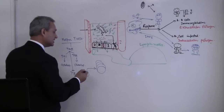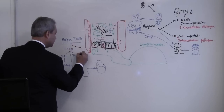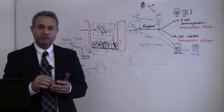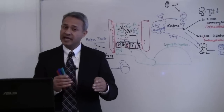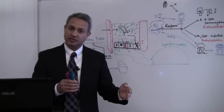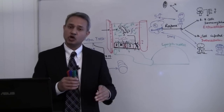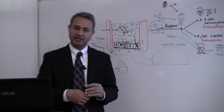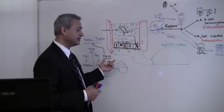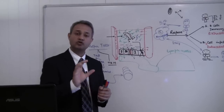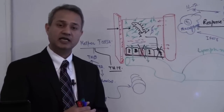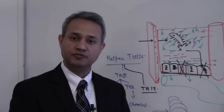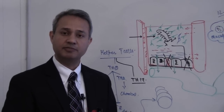Then we have T helper 17 cells, which are still under study but are considered pro-inflammatory cells — meaning they help the inflammation process. They cause neutrophils to come into the tissue and produce inflammation in that area. Nowadays research is very intense on the role of T helper 17 cells in autoimmune diseases, where neutrophils are incorrectly reacting to body tissue that is not infected or pathological.